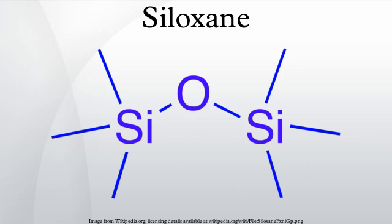A siloxane is a functional group in organosilicon chemistry with the Si-O-C linkage. The parent siloxanes include oligomeric and polymeric hydrides. Siloxanes also include branched compounds, the defining feature being that each pair of silicon centers is separated by one oxygen atom. The siloxane functional group forms the backbone of silicones, the premier example of which is polydimethylsiloxane.